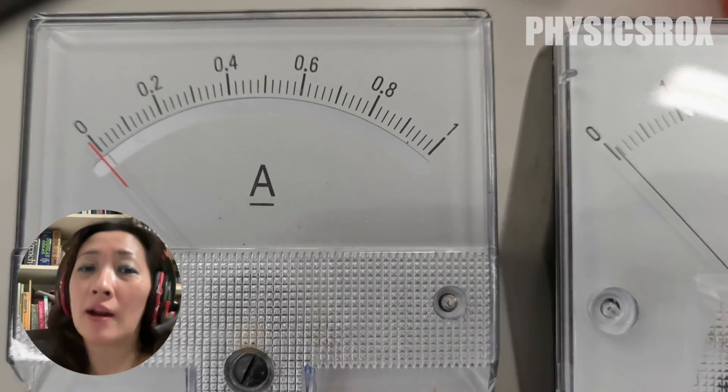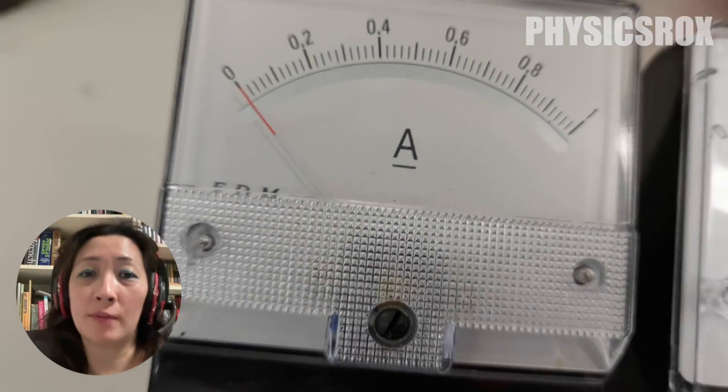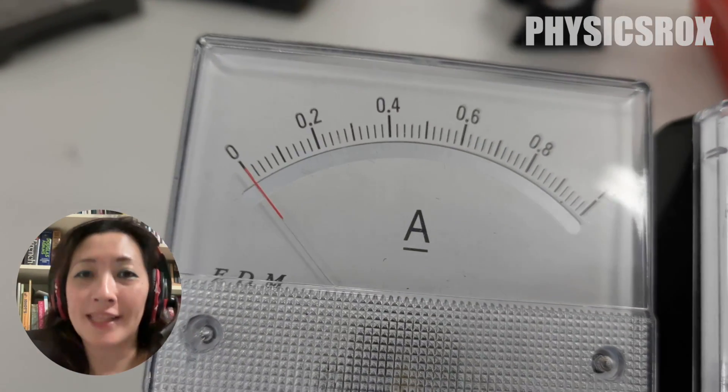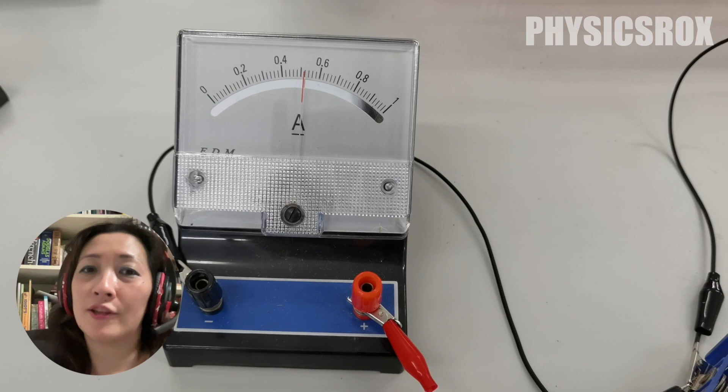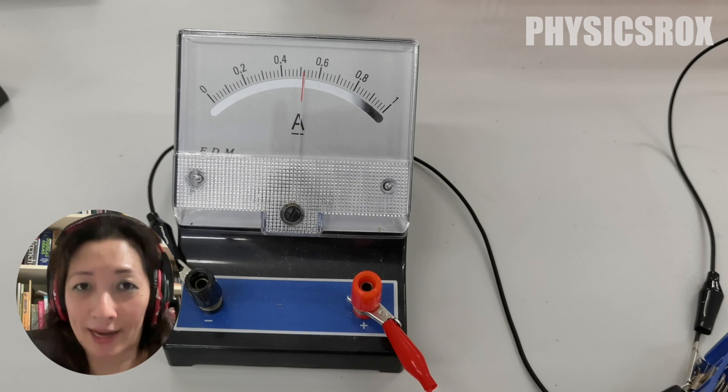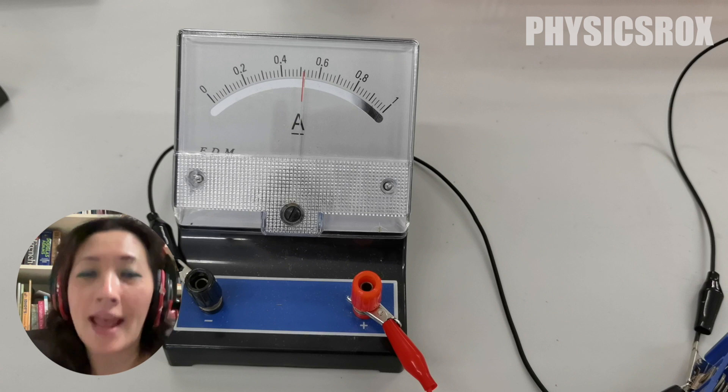The anti-parallax mirror is a mirror strip that is found under the scale just like this. When we're looking at the scale from this angle, that's how we know we're taking the reading in the correct way where we are now avoiding parallax error. This is the most accurate position of the eye where we can take our reading.